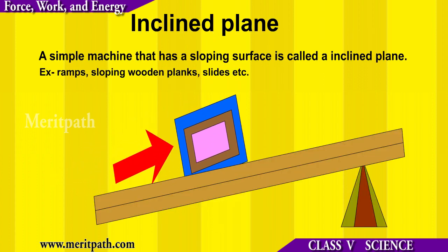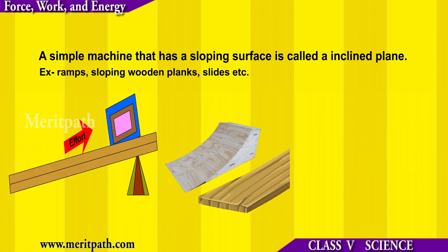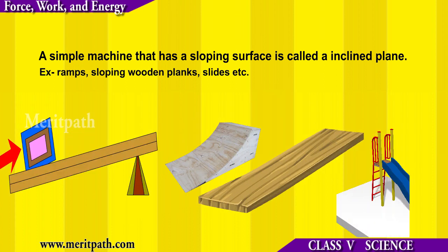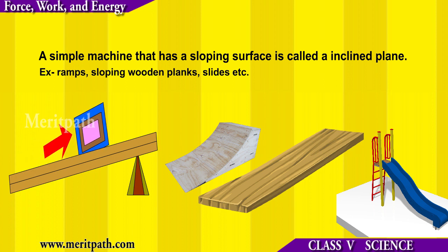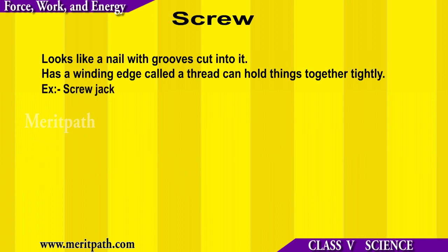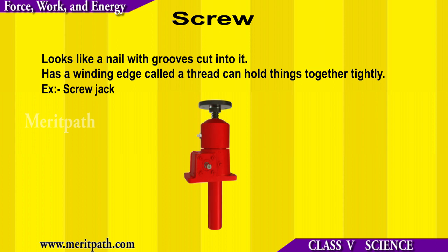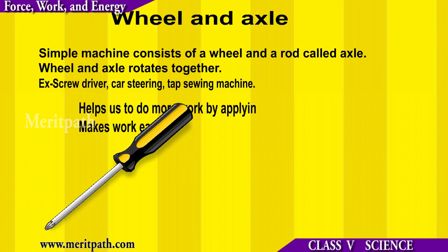An inclined plane has a sloping surface — examples include a ramp and a slide. A screw is a simple tool which looks like a nail with grooves cut into it; it can hold things tightly.